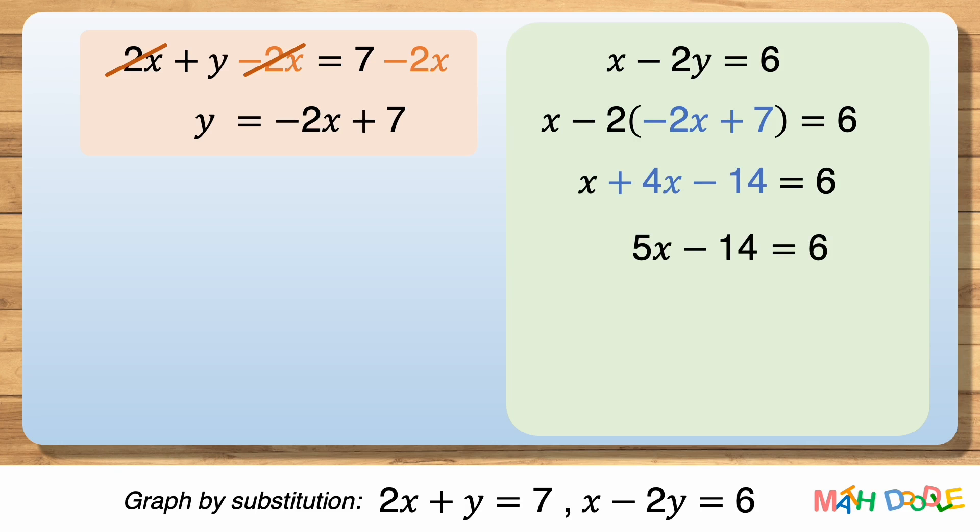Now, to find the value of x, let's solve this equation for x. After adding 14 to both sides of the equation, we have 5x equals 20.